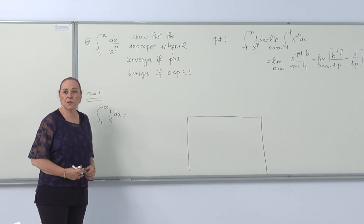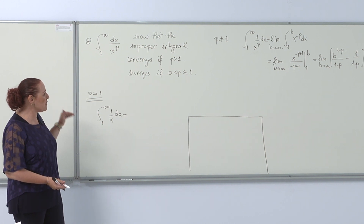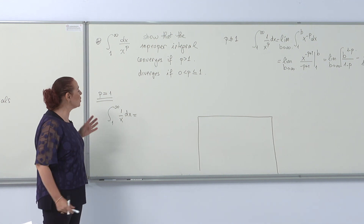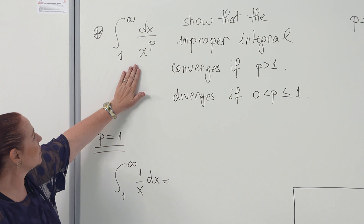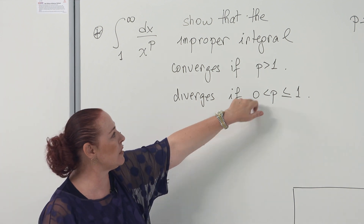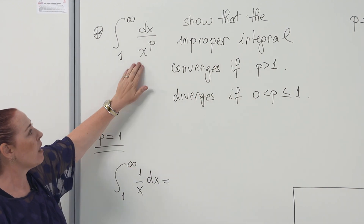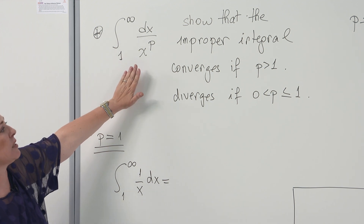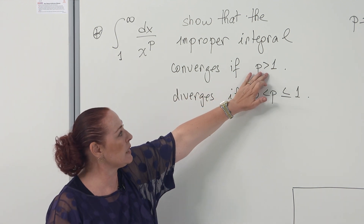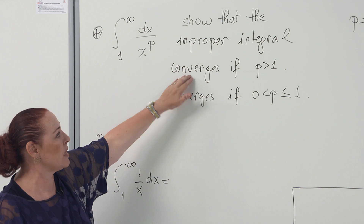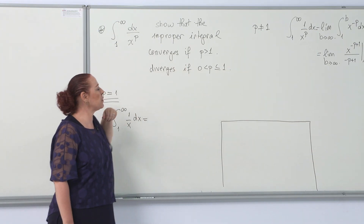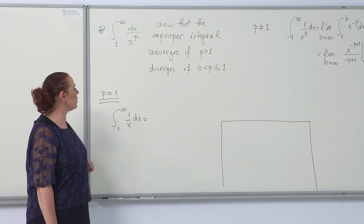In the previous examples we've seen that the pace at which the graph approaches its horizontal asymptote makes a difference. Now we're going to cover them all together with the p-integral: the integral from 1 to infinity of 1 over x to the p dx, where p is greater than 0. In each case, y equals 0 is always the horizontal asymptote. We'll show that if p is greater than 1, the approach is quicker so it converges, but if p is between 0 and 1, the approach is not quick enough so it diverges.